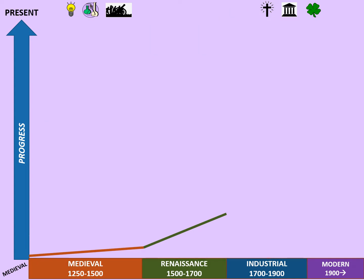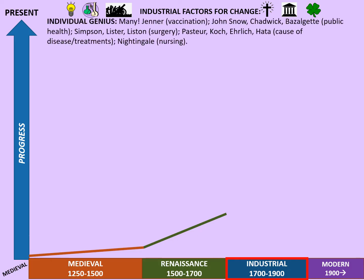Next up we've got the period of the Industrial Revolution, from roughly 1700 to 1900. There are a lot of significant individuals: Jenner with his smallpox vaccination; John Snow discovering that cholera was a waterborne disease, even if no one believed him at first; Edward Chadwick with his influence on government policy; and Joseph Bazalgette's sewers — all of which had positive impacts for public health. Then we've got Simpson's chloroform as one of the first effective anaesthetics, Lister and Liston who both improved surgery, Pasteur with his germ theory as a crucial and correct theory about the cause of disease, Robert Koch who developed them, Ehrlich and Hata who developed Koch's ideas as part of his team, and Florence Nightingale who contributed to improvements in nursing.